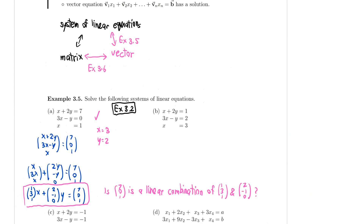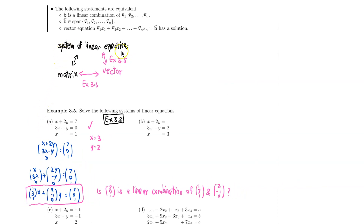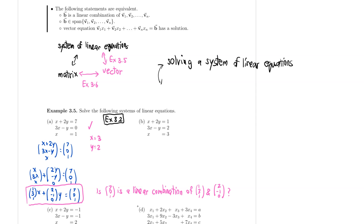What this essentially means is that whenever we try to solve a system of linear equations, we can actually translate that into solving a linear combination problem instead. So in a way, solving a system of linear equations is basically the same task as solving a linear combination problem. If something is a linear combination of some set of vectors, then that something belongs to the span of those vectors.